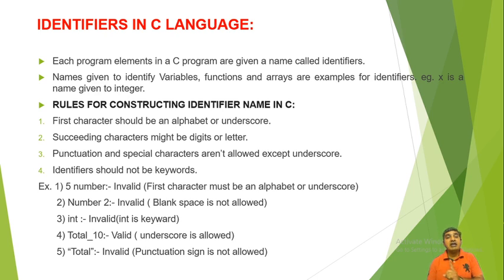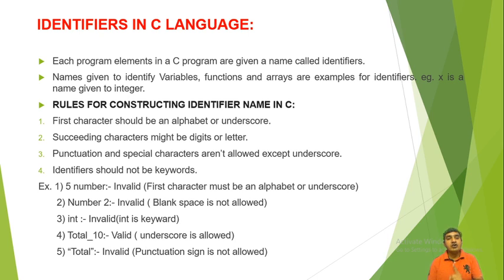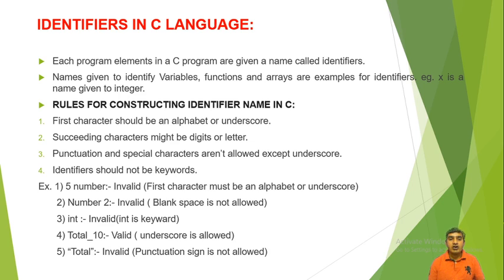There are some rules for constructing identifier names in C. First, the first character should be an alphabet or underscore. Second, succeeding characters might be a digit or letter. Third, punctuation and special characters are not allowed except underscore.